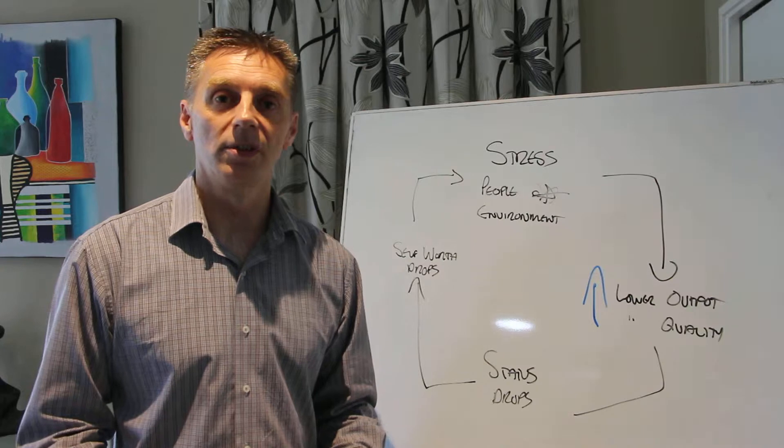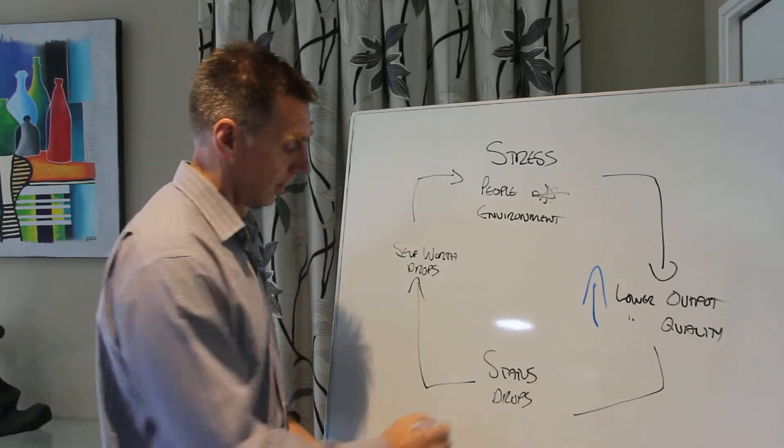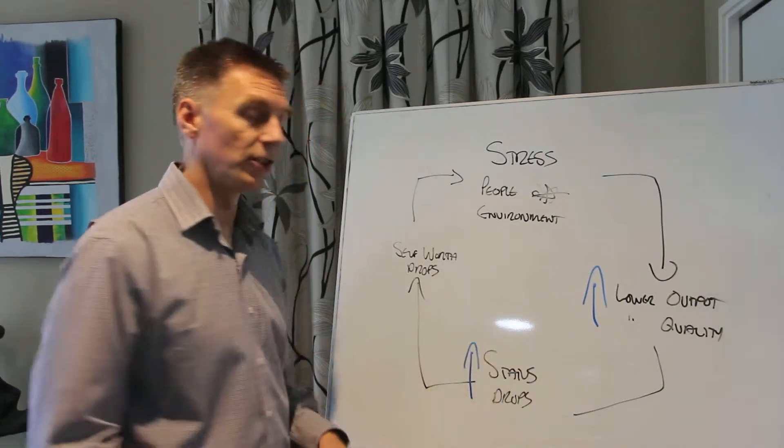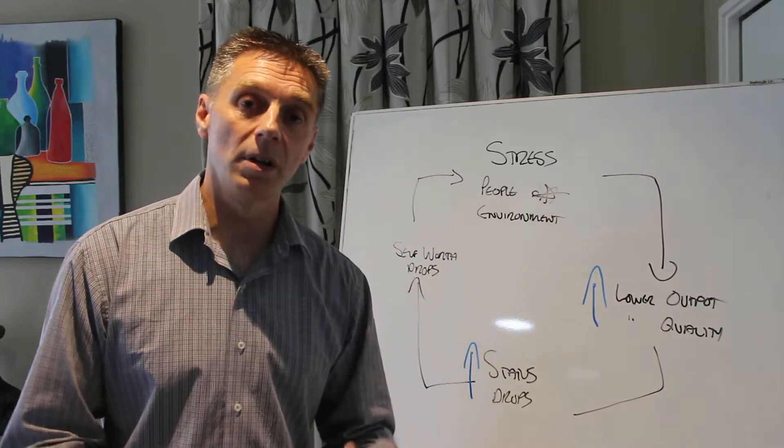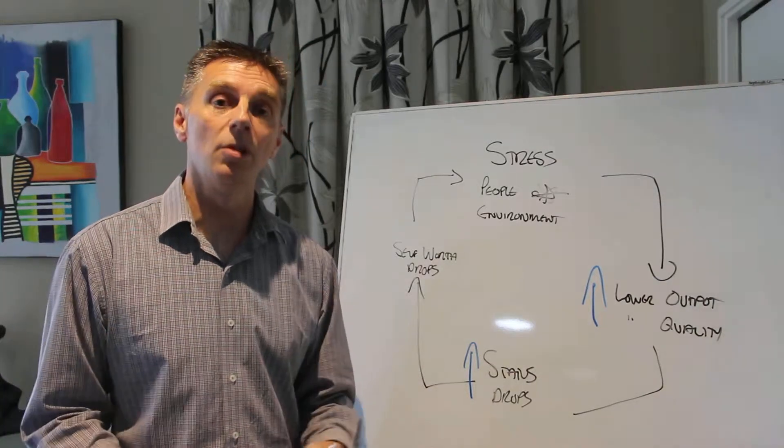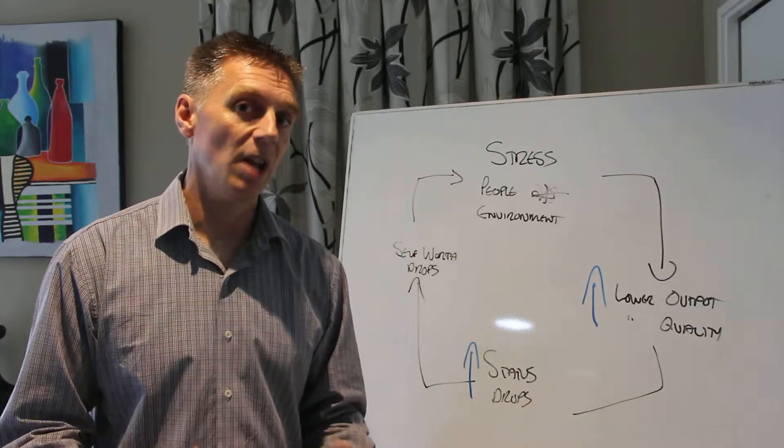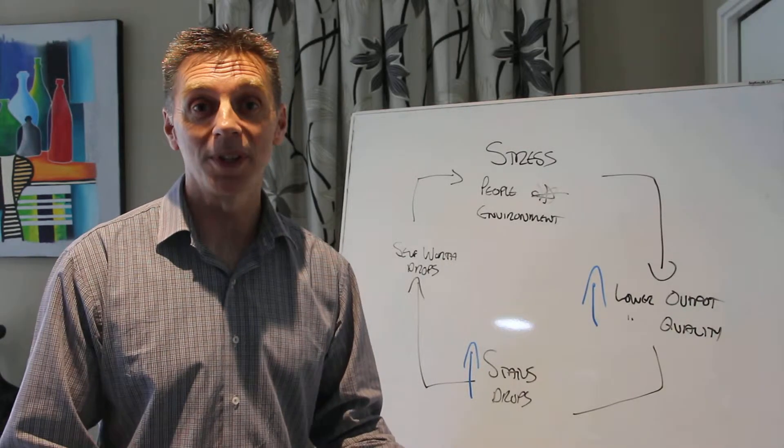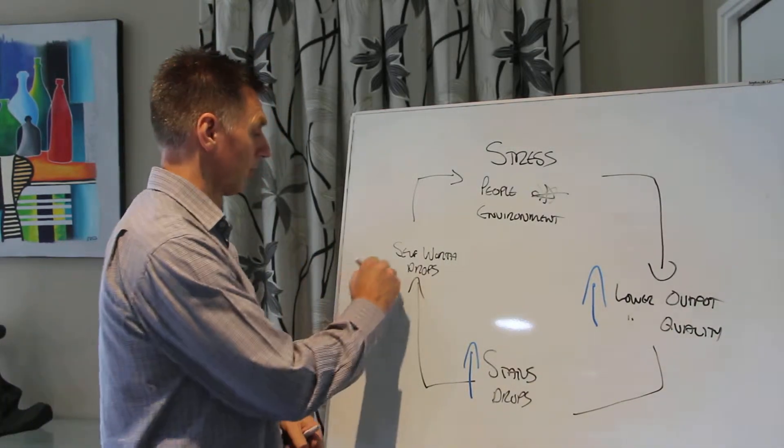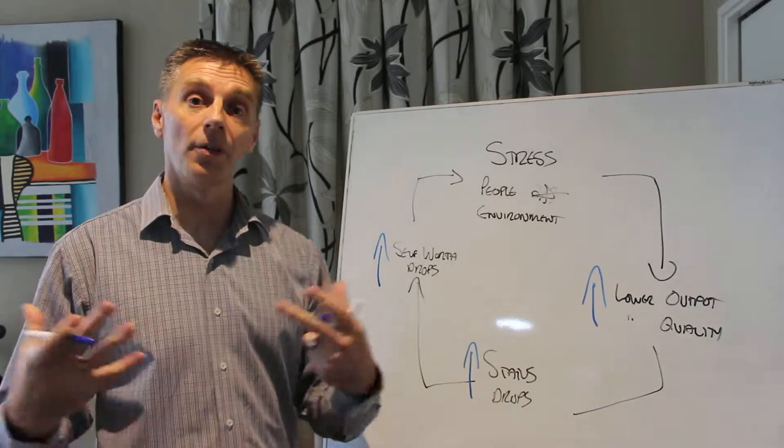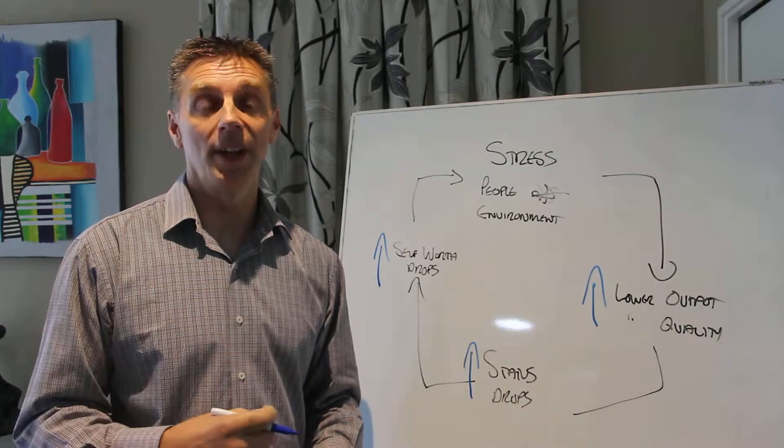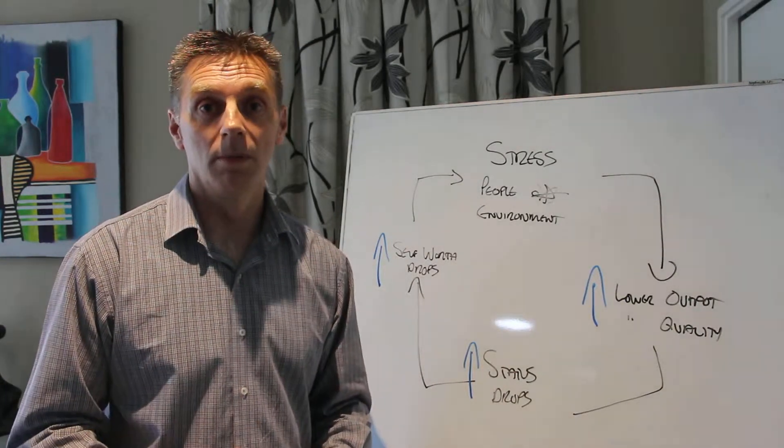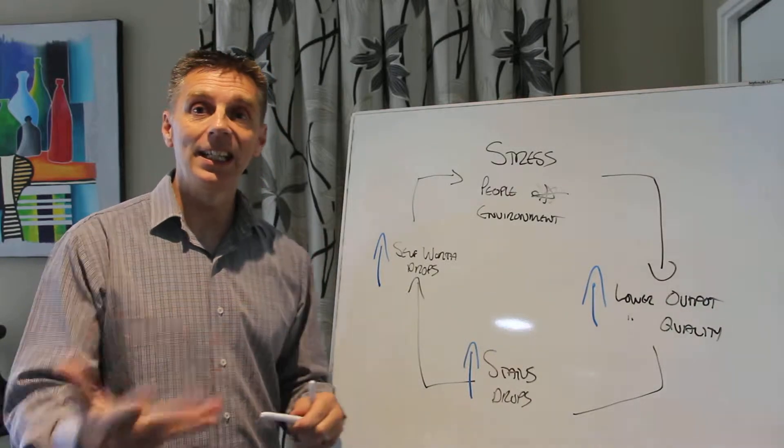Output of work increases. The quality of the work increases. As a result of that, the status within the work group, or within their immediate group, their team, increases, because they're now viewed as being more competent again. And with that comes an increase of self-worth, and a belief, then again, that they can actually do the job.